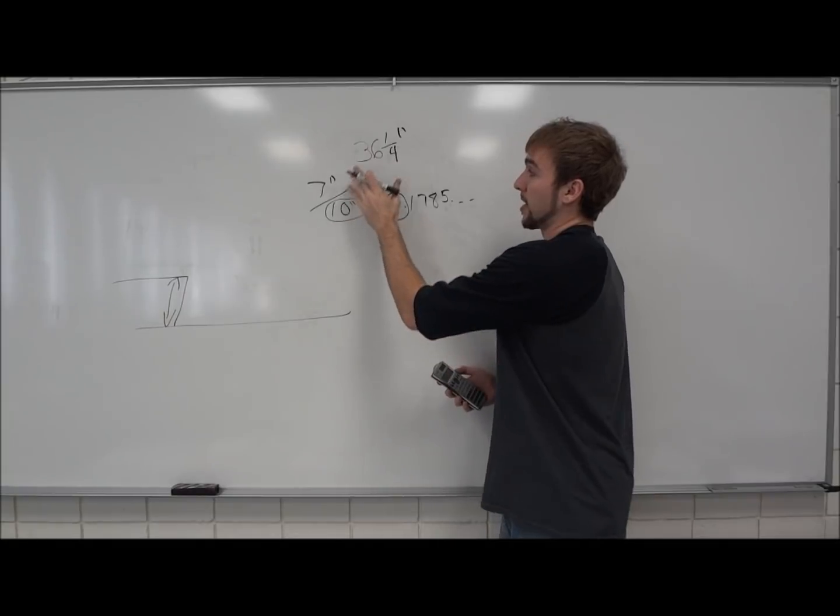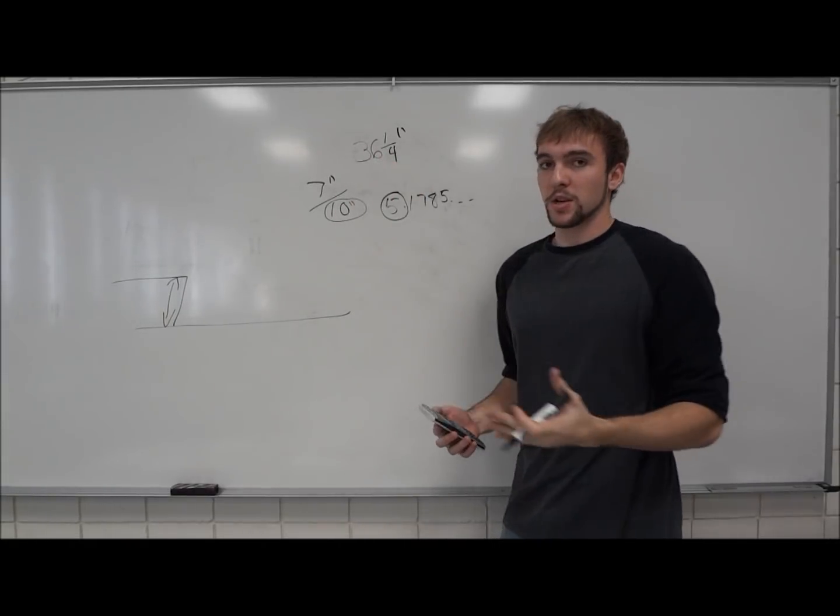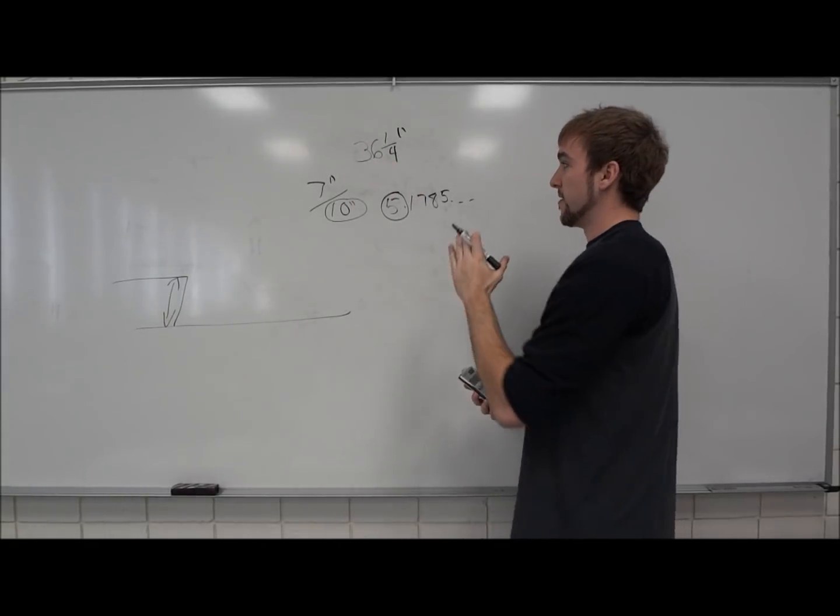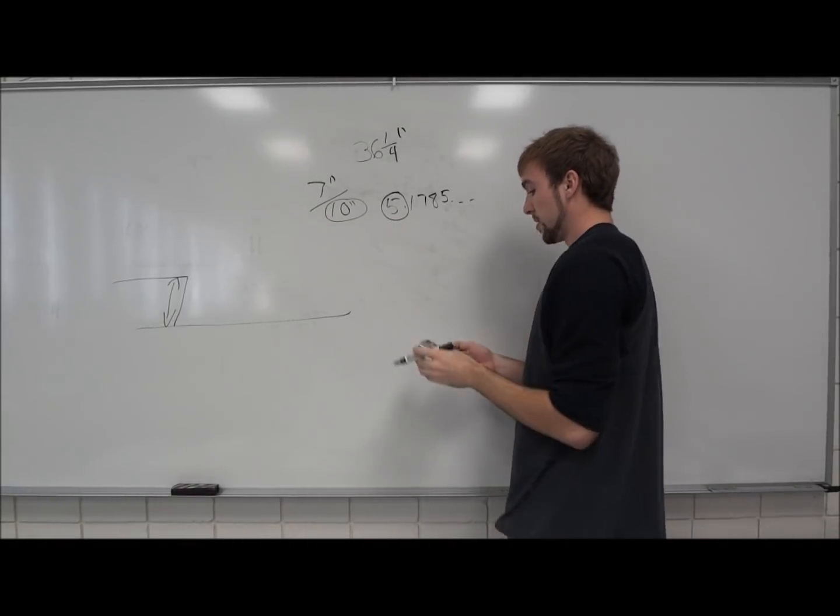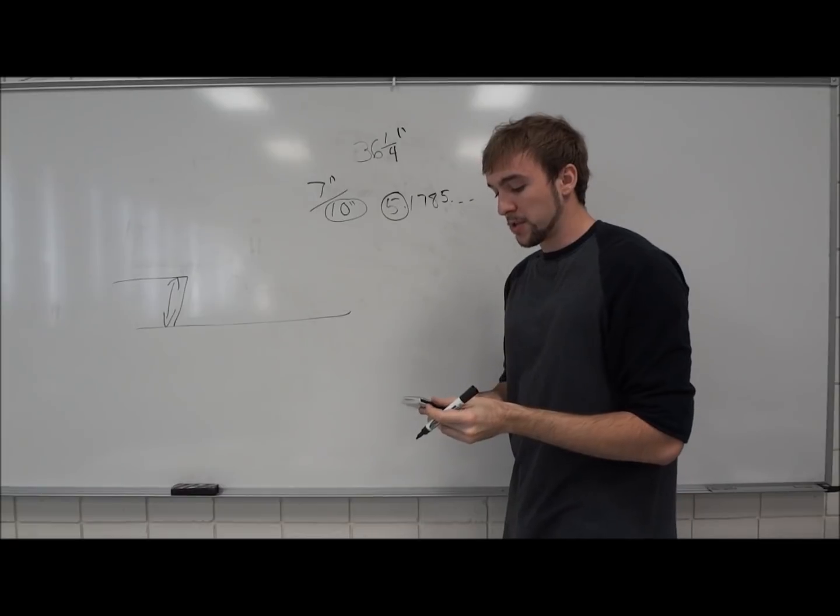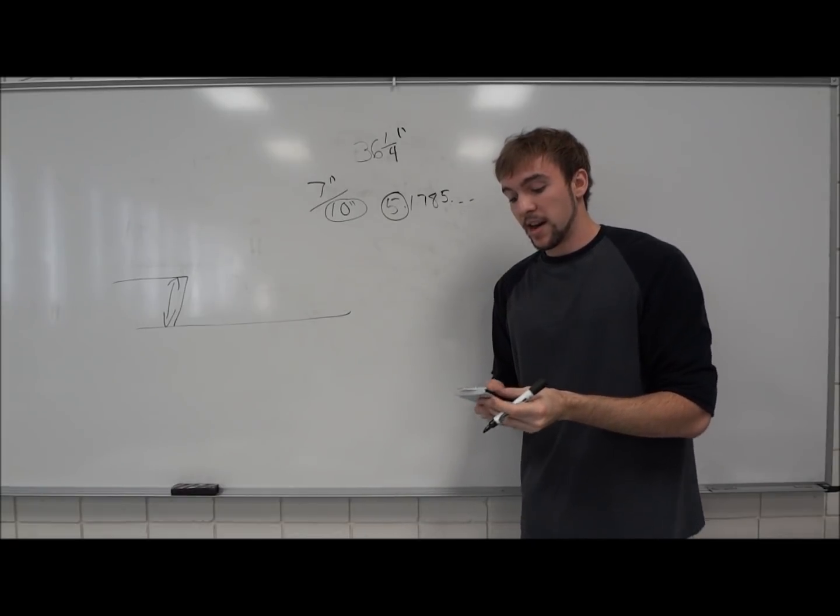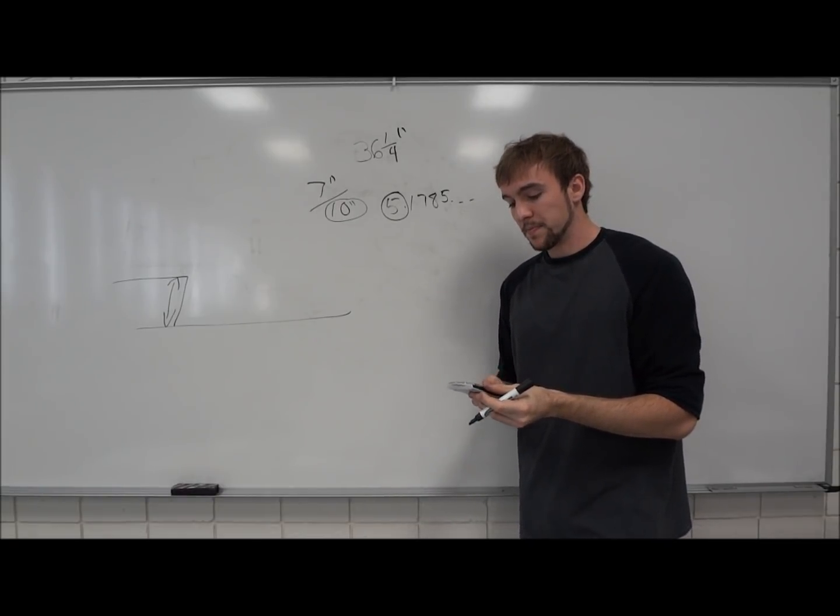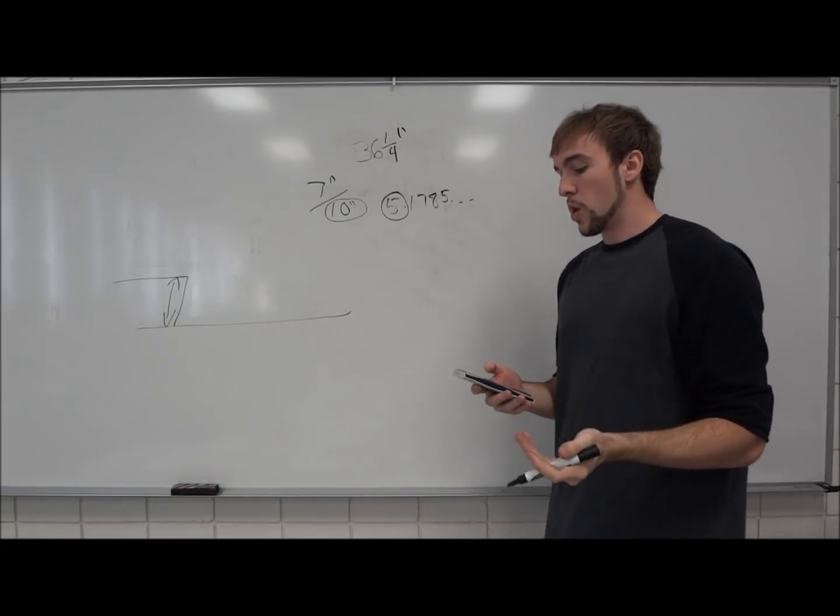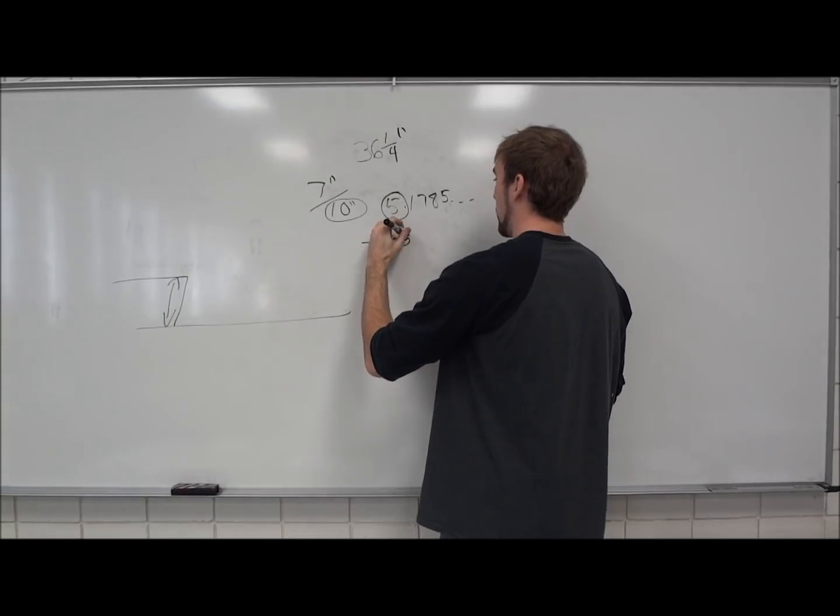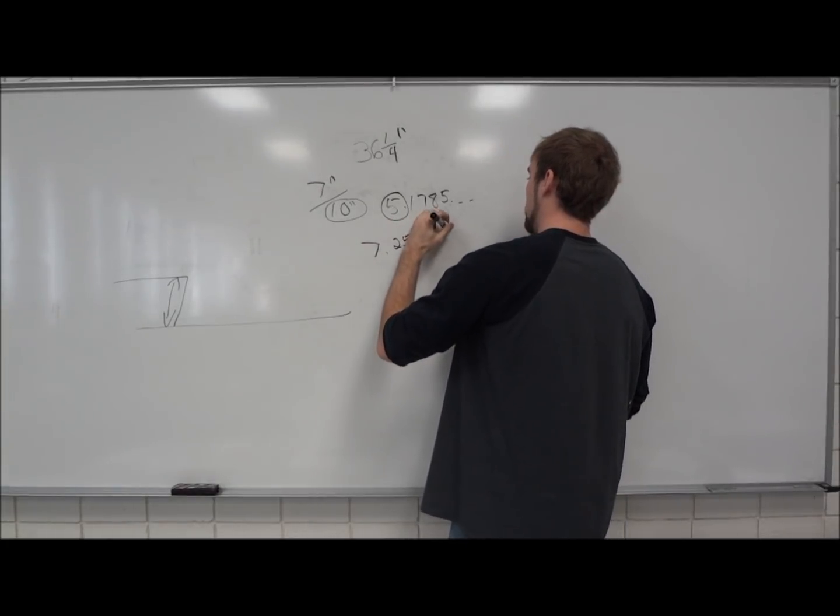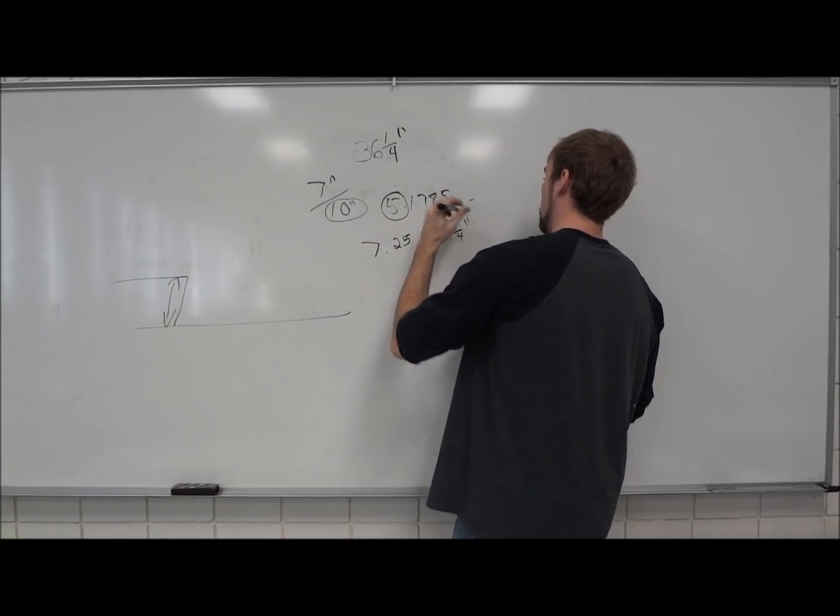Now we're going to go back to our original 36 and a quarter inch rise and we're going to divide it by the 5 steps that we now know that we're going to need. So going back, 36.25 divided by 5 steps, what we get is 7.25, or 7 and a quarter inch.